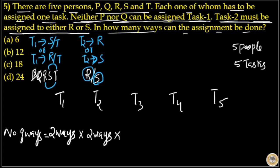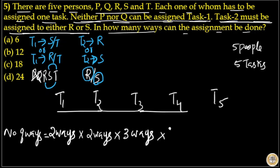Looking at task 3: tasks 1 and 2 are already assigned to two people, so the remaining is 5 minus 2, which is 3 people — so task 3 can be completed in 3 ways. For task 4, three tasks have been assigned to three people, leaving 2 people, so task 4 can be completed in 2 ways. For task 5, four tasks have been assigned to four people, leaving 1 person, so task 5 can be completed in 1 way.